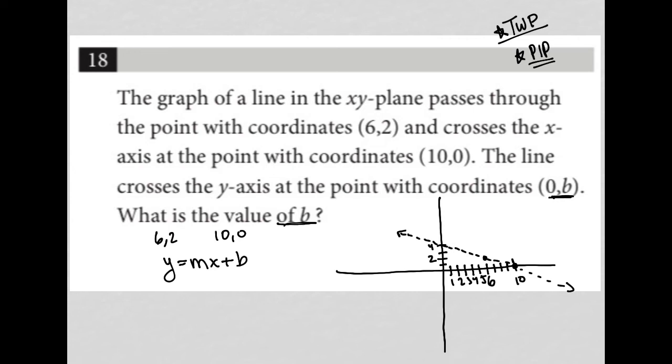The slope is the difference in Y values. So that's 0 - 2 over the difference in X values, so 10 - 6, which gets me -2/4, which is -1/2. So that's what m is equal to. So I can say y = -1/2x + b.